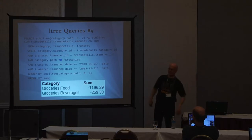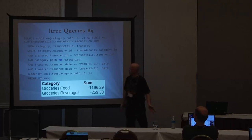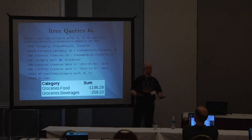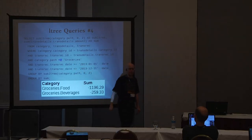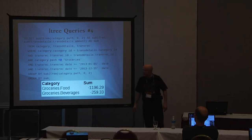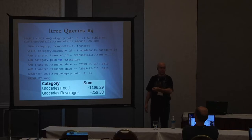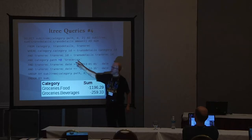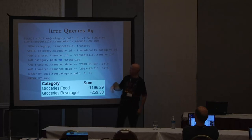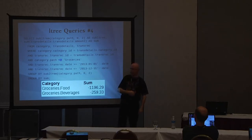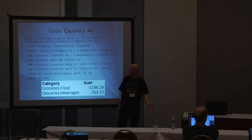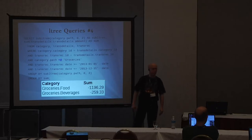Now let's get really complicated — actually, it's really the same query as before. What we're doing now is just wanting to see groceries by themselves. The left angle bracket with the at-sign means 'anything underneath groceries.' You specify the category you want to see and it shows everything underneath that category as far down the tree as you want to go. In this case I went two levels deep, so we get groceries.food and groceries.beverages.